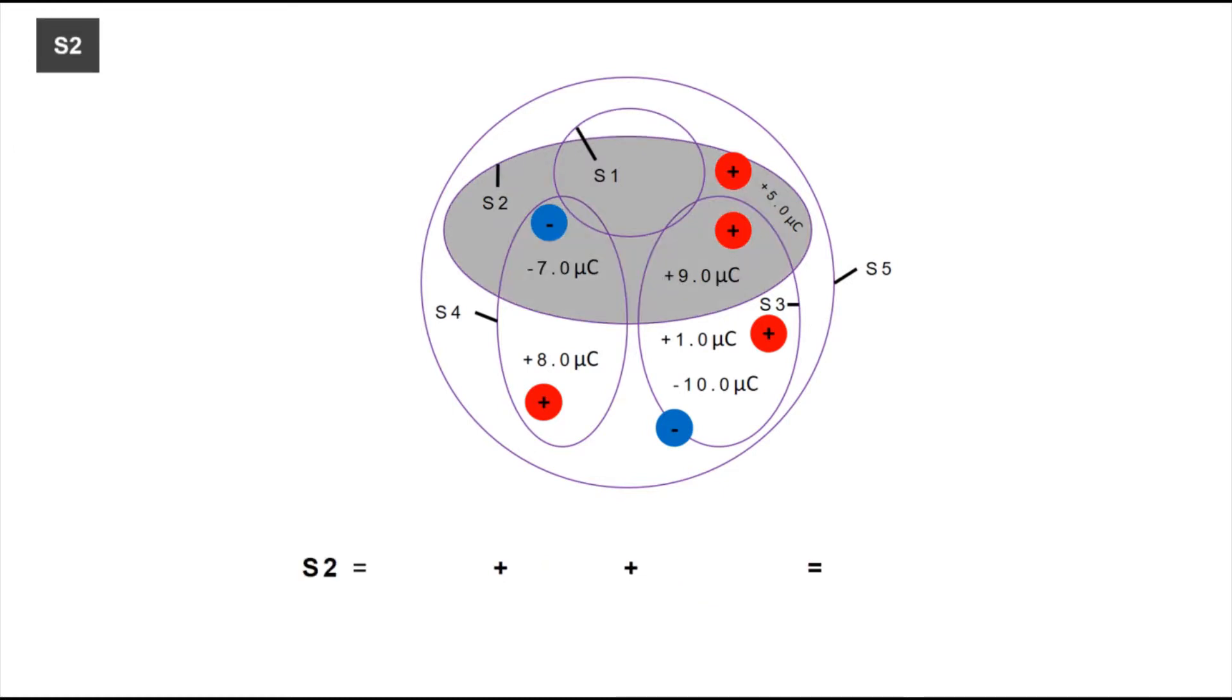S2 is now represented by the gray shade. There are three charges enclosed. To find the total electric flux, we are going to add all of these charges. The answer will be 7 µC.